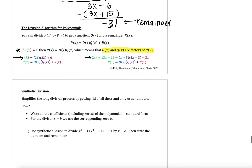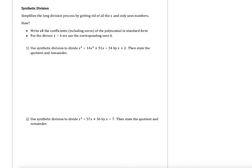Let's talk about what synthetic division is. Synthetic division simplifies the long division process by getting rid of all the x's and only using numbers — that's what makes it a much simpler process. We write all the coefficients, including any zero terms. If we're missing a term like an x squared or an x term, we put a 0 in place of any term that's missing, since the coefficient there would be 0. We write out all the coefficients of the polynomial in standard form — from highest to lowest power. For the divisor piece, which would be that x minus b linear factor, we're going to use the corresponding zero of b.